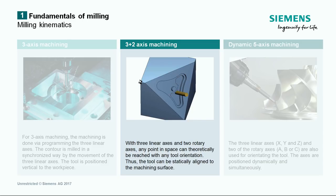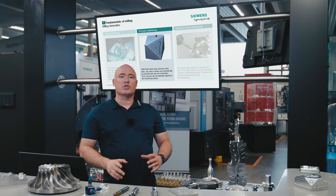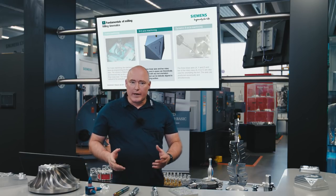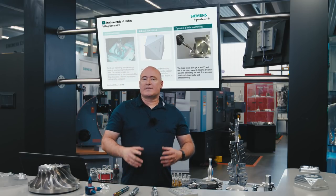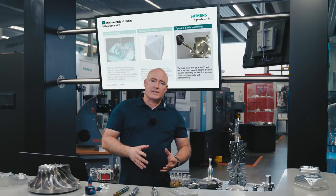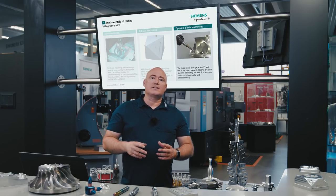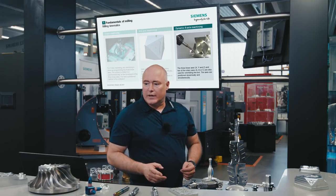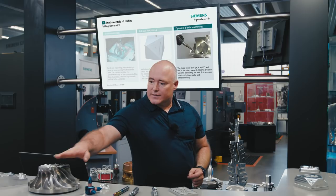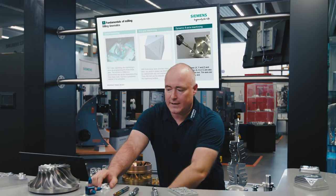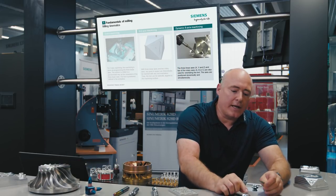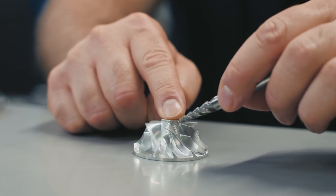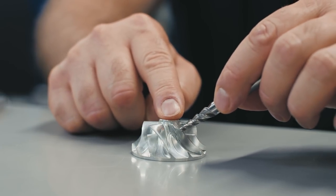In this case, the tool is positioned statically to the machining surface. Another variant is the dynamic orientation of the tool, called five-axis simultaneous machining. The three main axes and the two rotary axes are moved at the same time, simultaneously. A typical application for this method is the impeller. It's easy to see here that these flowing contours could not be produced with a three-plus-two, static orientation of the tool.